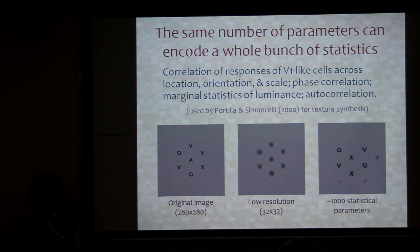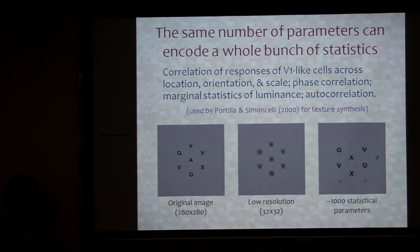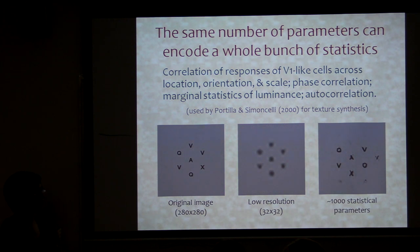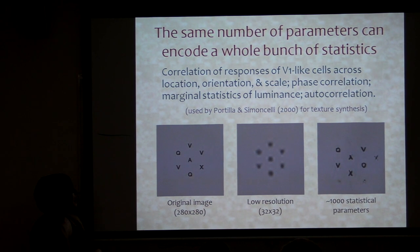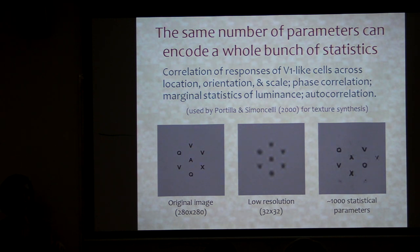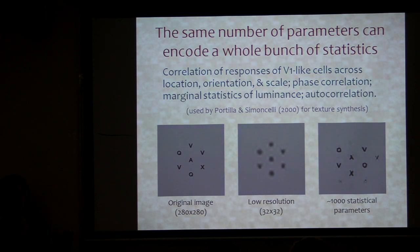Throughout this talk I'm going to be talking about the same set of summary statistics. The idea is that you first apply something a lot like V1 — oriented filters at multiple scales — but then the summary statistics you collect are things like cross-correlations of responses of those cells, pairwise cross-correlations. This is useful information: if you look at whether a vertical tends to correlate with another vertical, that can tell you about extended contours, or something looking periodic. Cross-correlations across orientation let you look for corner-like things or T-junctions. There are also cross-correlations across scale and phase correlations, which give you an idea of how sharp edges are and directionality of edges.